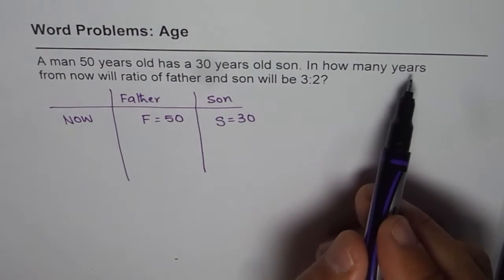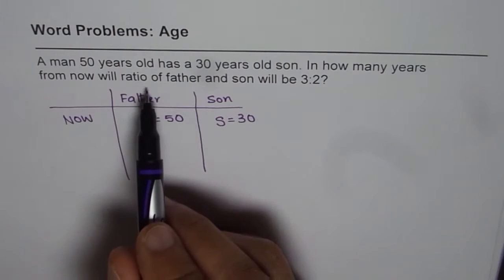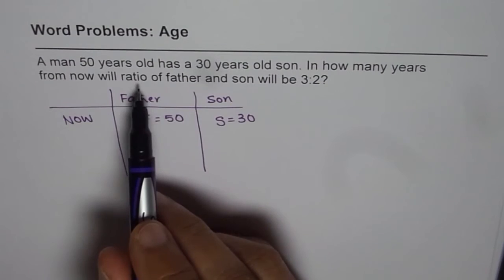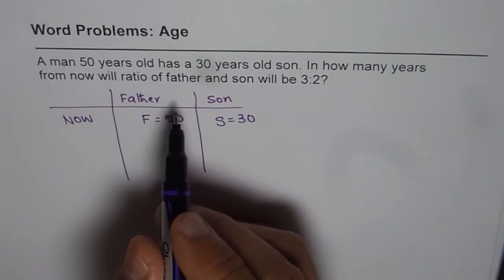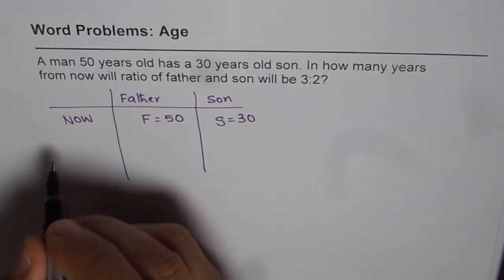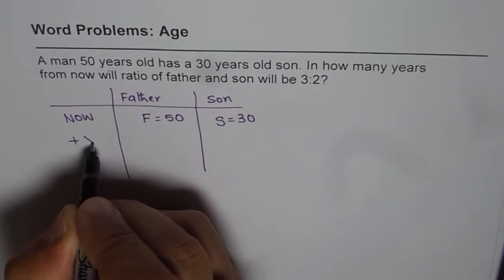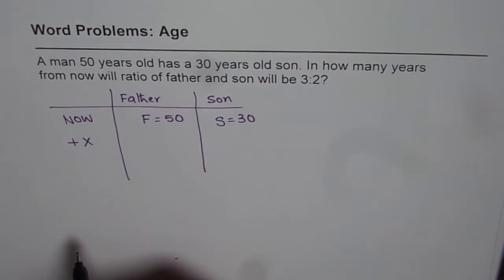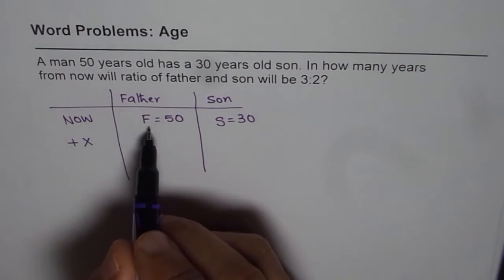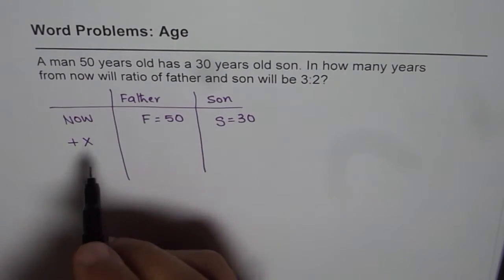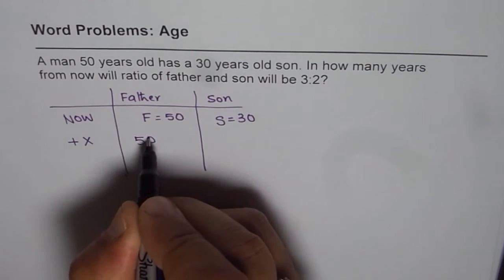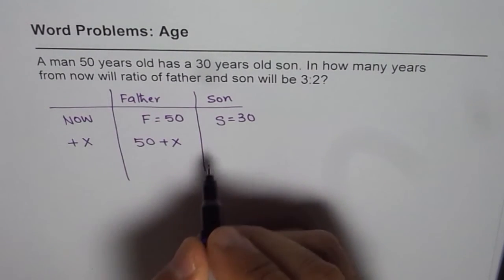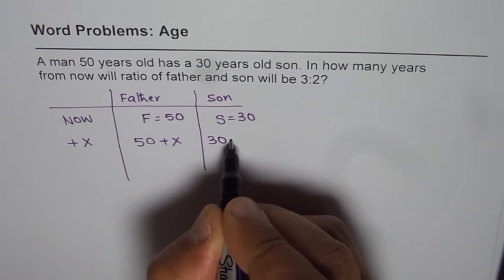In how many years from now will the ratio of father and son be 3 to 2? We do not know how many years from now, so let that be x years. After x years, the father's age will become 50 + x, and the son's age will become 30 + x.